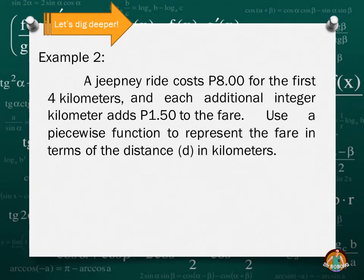Let's have another example. A jeepney ride costs 8 pesos for the first 4 kilometers. So 8 pesos is the fare for the first 4 kilometers. And each additional integer kilometer adds 1.50 pesos to the fare. So if you exceed 4 kilometers, let's say for example 5 and more, you will add 1.5 to the fare. Each integer. Use a piecewise function to represent the fare in terms of distance in kilometers. What is our domain here? Our domain here is D or the distance. So let's have the function f(D). What is the first condition? The first condition is you will pay 8 pesos for the first 4 kilometers. Meaning your D here is greater than 0 or less than or equal to 4.